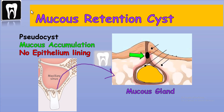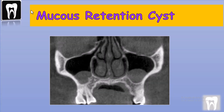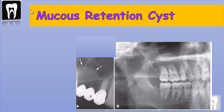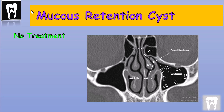The mucous retention cyst inside the maxillary sinus can be seen on a panoramic radiograph. It can be unilateral, bilateral, or even multiple. In the radiograph, it appears as a slight radiopaque dome-shaped lesion with no cortical borders — keep that in mind — and it does not affect adjacent anatomical structures. It is radiopaque because it is full of mucous.